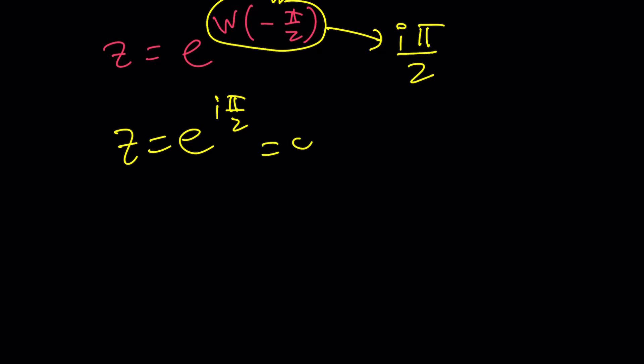And again this is e to the power i theta is cosine of theta plus i sine theta by using Euler's formula, amazing mathematician by the way. This is cosine pi over 2, let me think about it, isn't that 0, 0 plus i and it's just i. Yes z is equal to i. Did you know that?